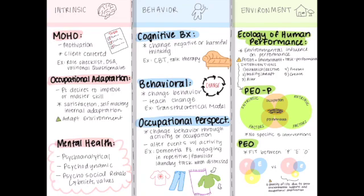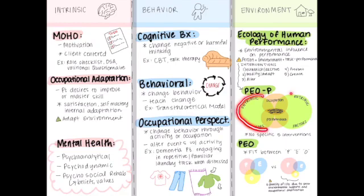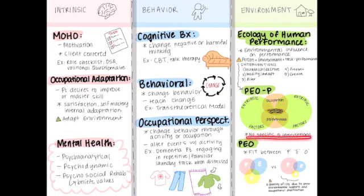Moving on to the PEOP model — this one is again similar to the previous model, except it doesn't have those intervention levels. The PEOP model, or the person-environment-occupation-performance model, looks at the intrinsic factors or the person with the extrinsic factors or the environment, as well as the occupation and the performance, and how they all overlap to produce occupational performance and participation. All these factors contribute and work together to influence both performance and participation in occupation, with no specific five levels.